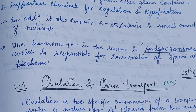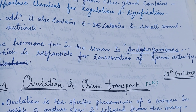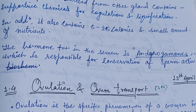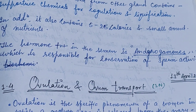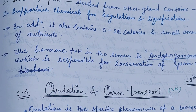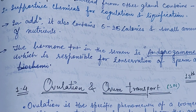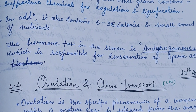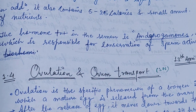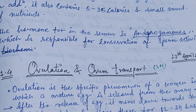The hormone present in the semen is androgammons, which is responsible for the conservation of sperm activity. This is a short description about the biochemistry of the semen. In the next video we'll see the ovulation and the ovum transport. Thank you.